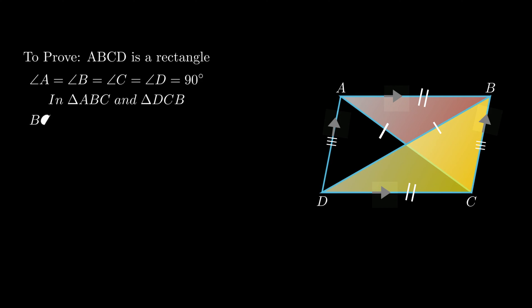As side BC is common to both triangles, therefore side BC equals side BC. Side AB equals side CD as opposite sides of parallelogram are equal. As diagonals are given equal, therefore diagonal AC equals diagonal BD.